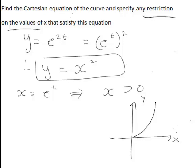So these are two examples of converting from parametric equations to Cartesian equations of a curve and looking at the associated constraints in terms of X.